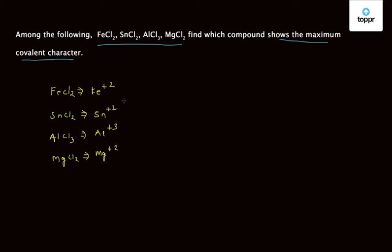As you know, the tendency completely depends upon the charge density of cation. So here, as there is more charge density corresponding to AlCl3, AlCl3 will have maximum covalent character as compared to the other compounds.